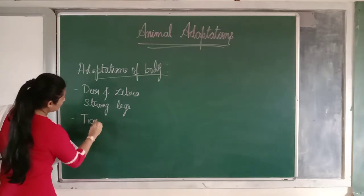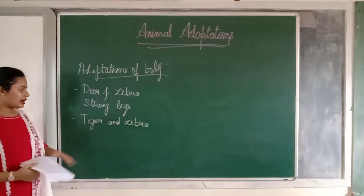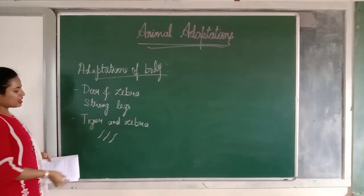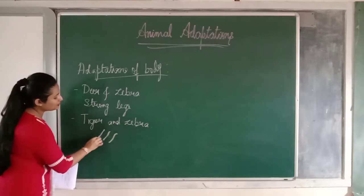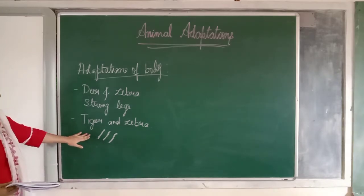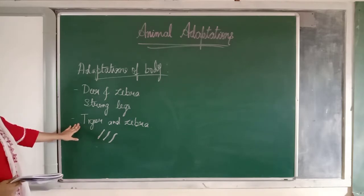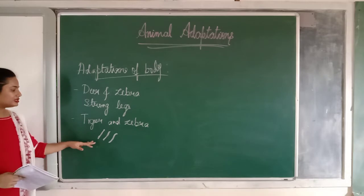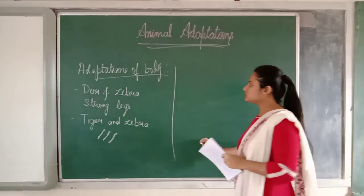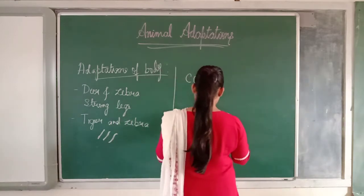Next, let us see tigers and zebras. Tigers and zebras have got stripes on their body. The zebra has got black and white stripes. These stripes help them to hide from other animals and blend with the surroundings. This feature is called camouflage.